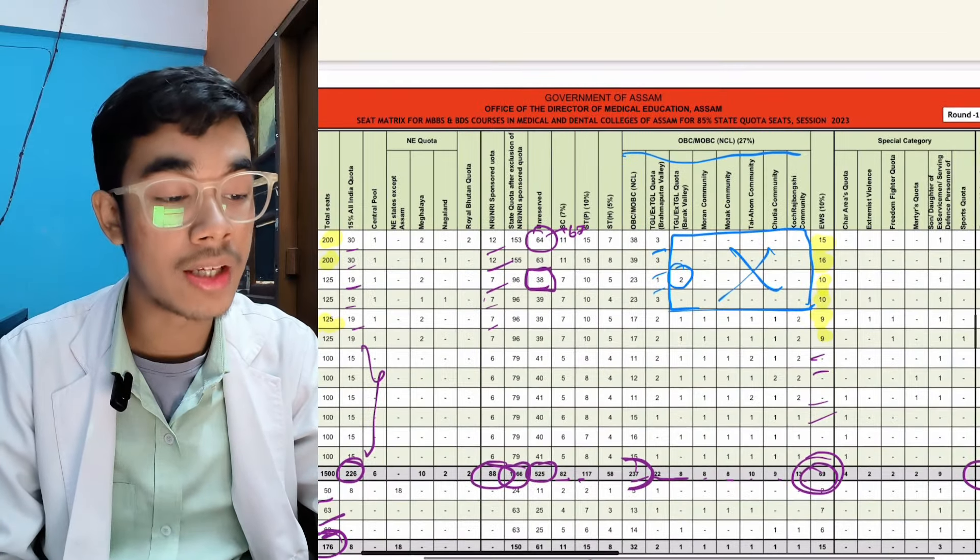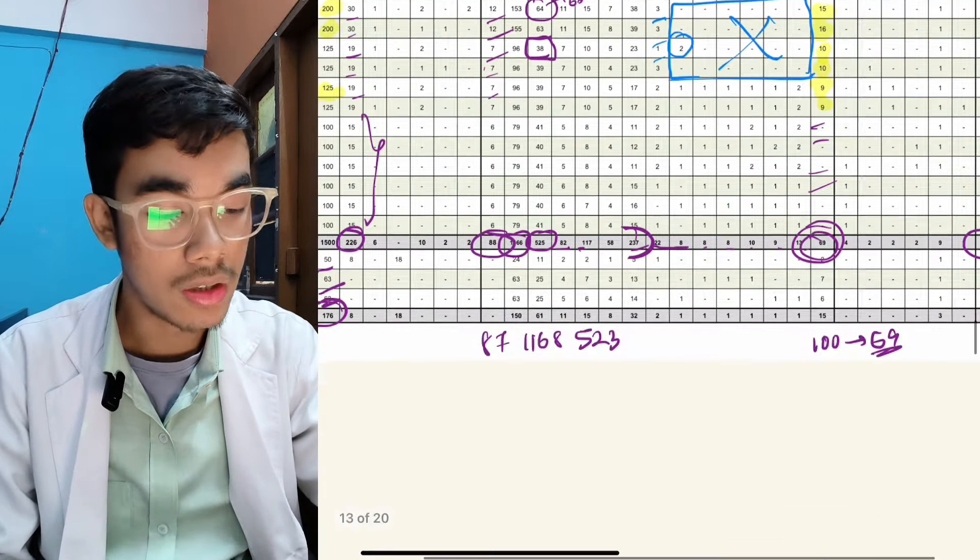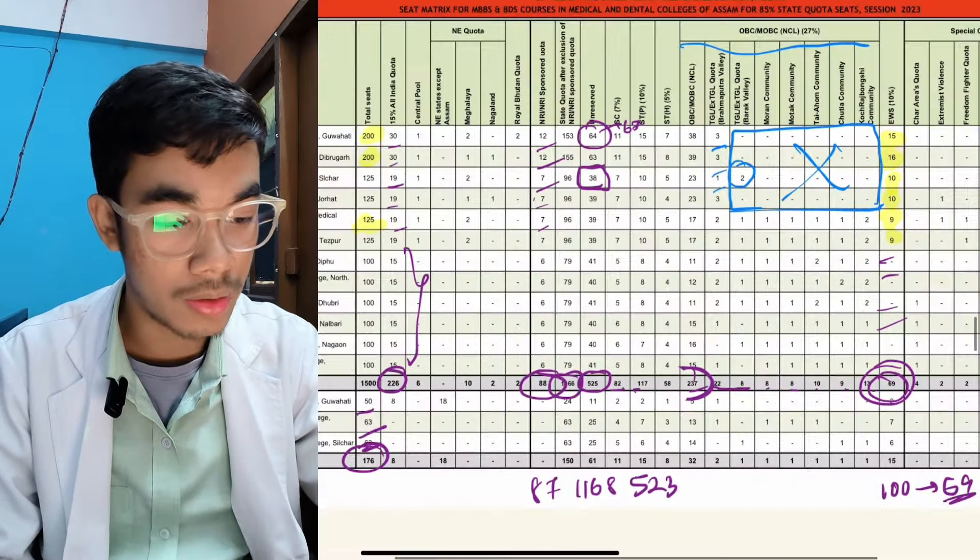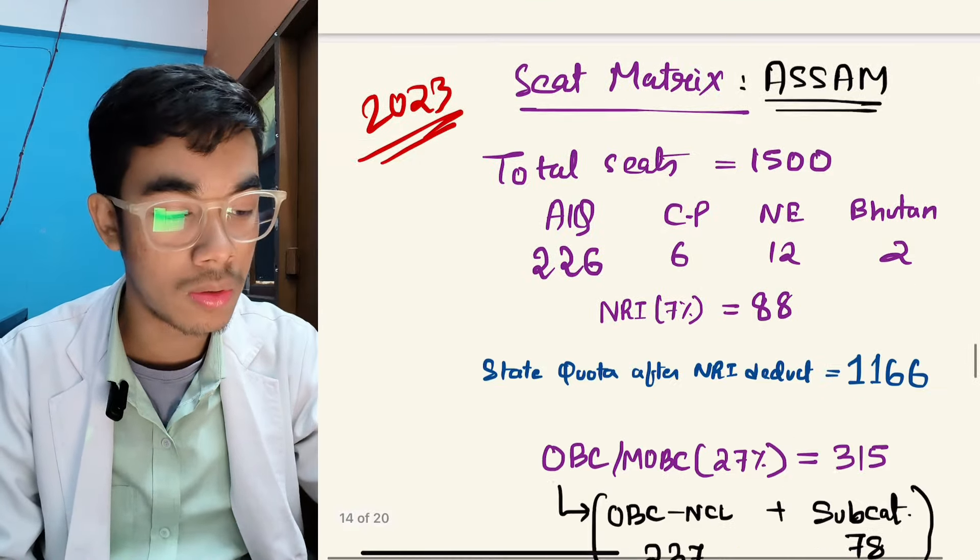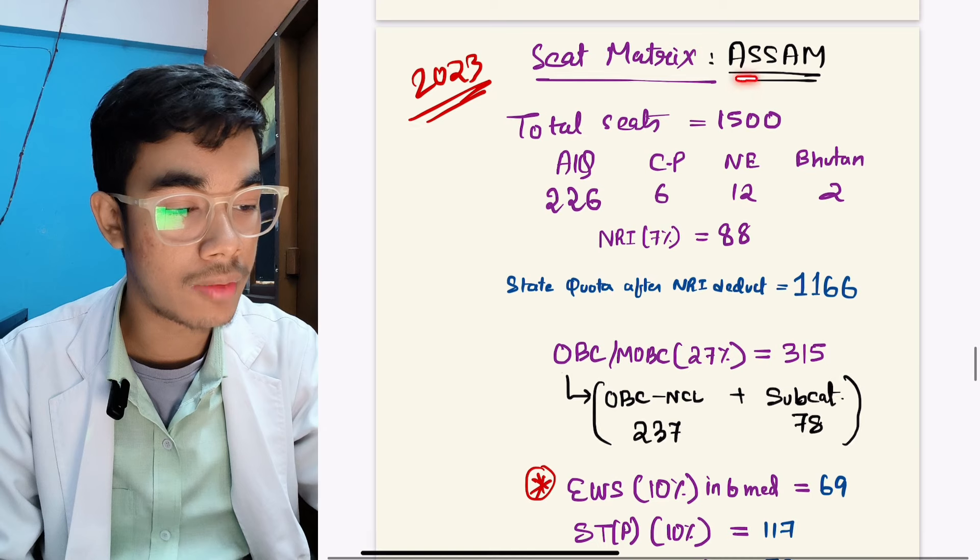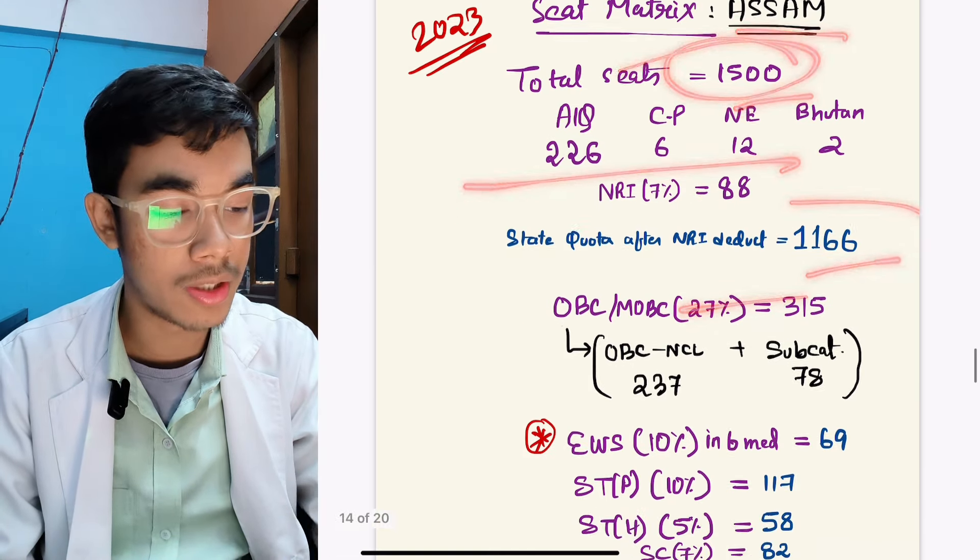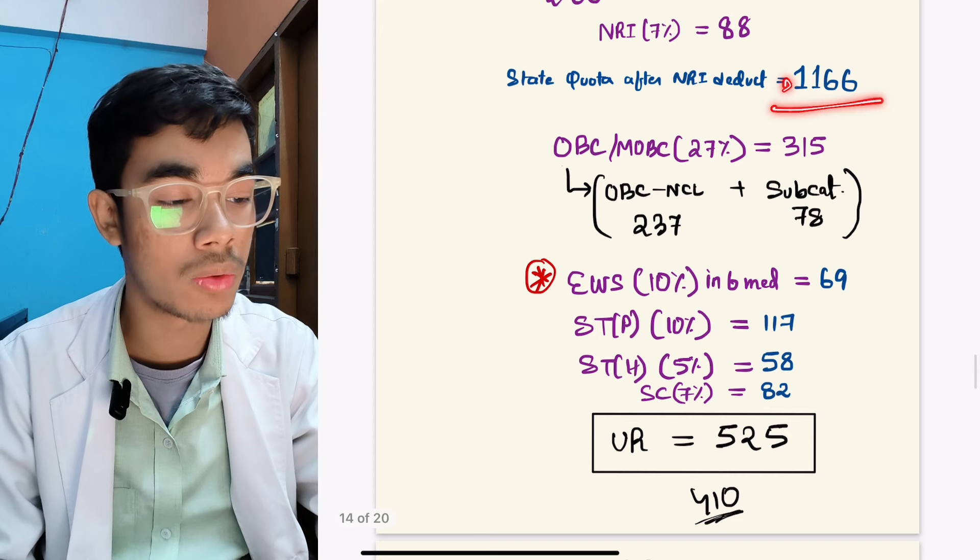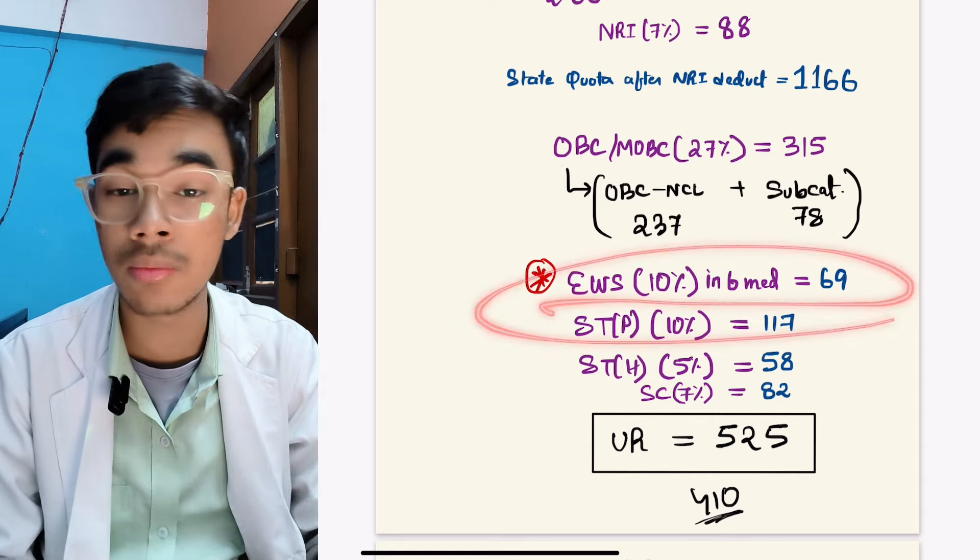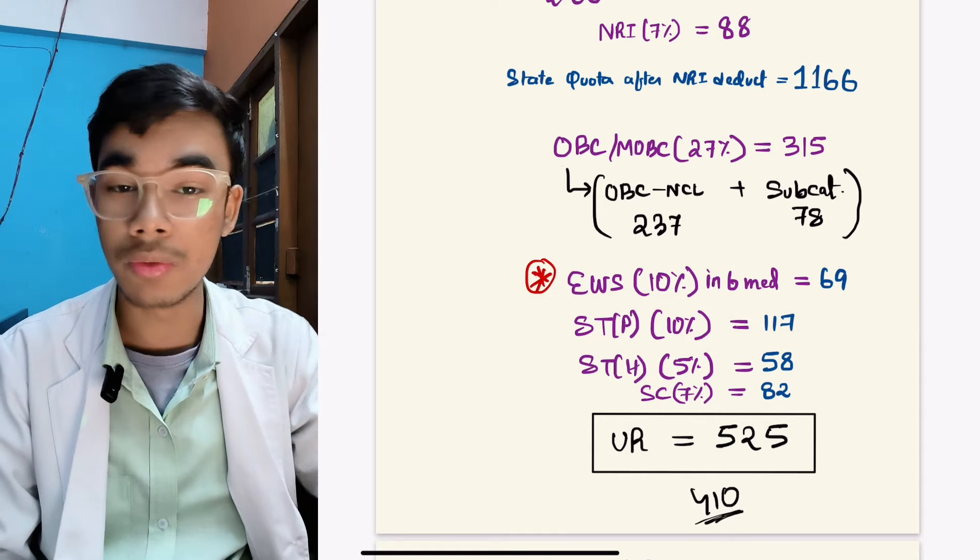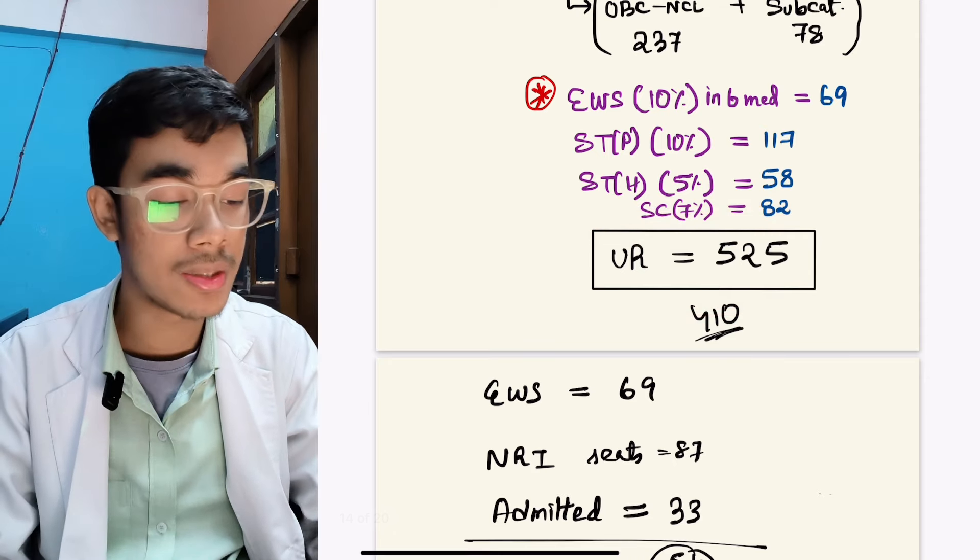85% state quota - in OBC/MOBC 315 seats, EWS only 69 means approximately 70 seats which was added. In UR 525 seats which was already increased.